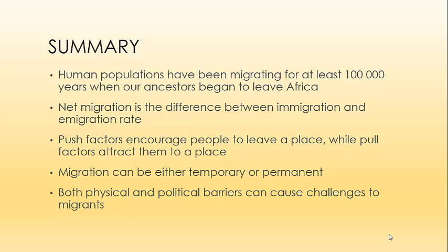In summary, today you learned that human populations have been migrating for at least 100,000 years when our ancestors began to leave Africa. Net migration is the difference between immigration and emigration rate. Push factors encourage people to leave a place, while pull factors attract them to a new place. Migration can be either temporary or permanent, and both physical and political barriers can cause challenges to migrants.